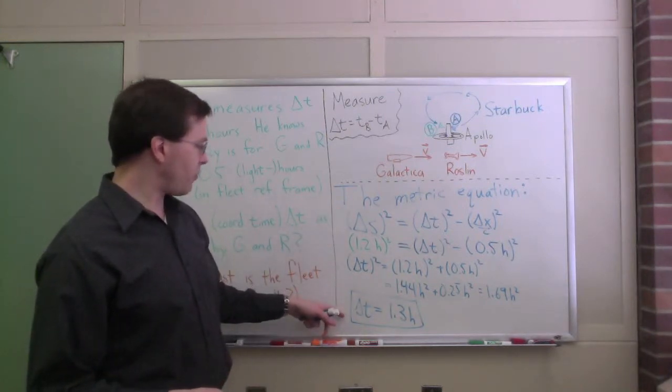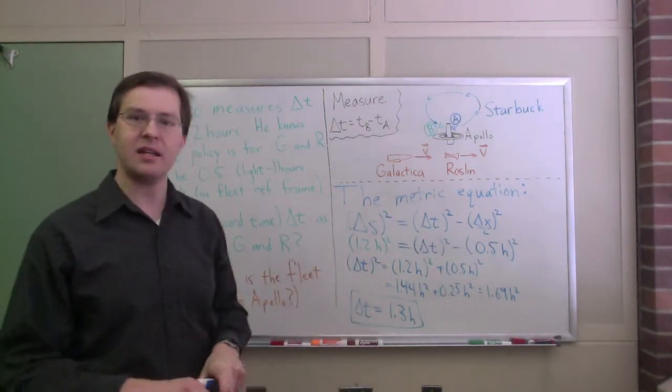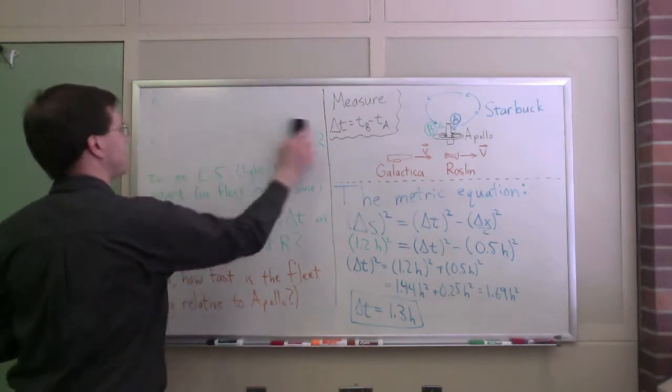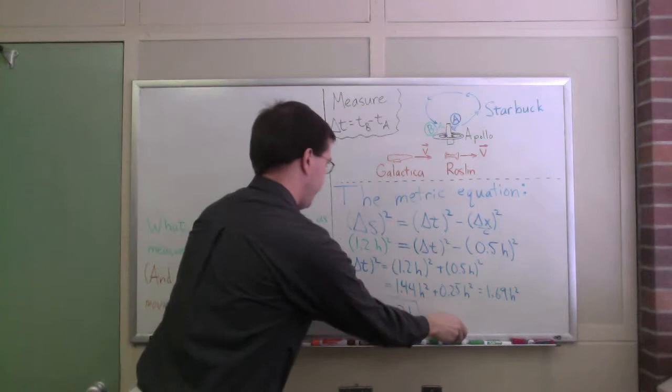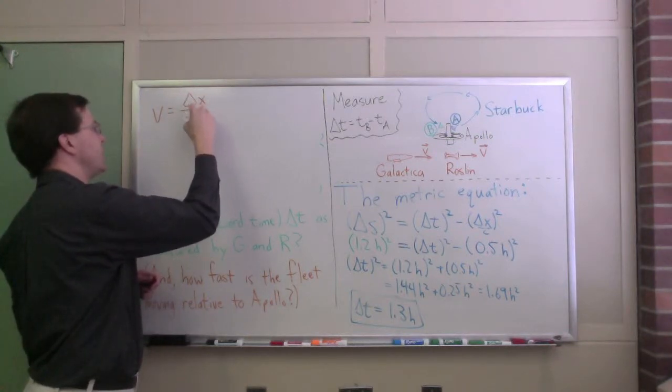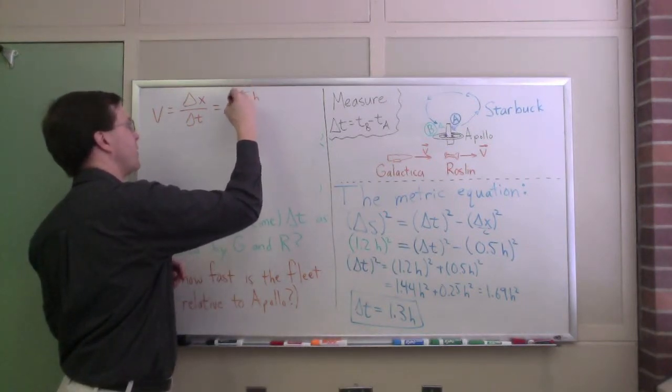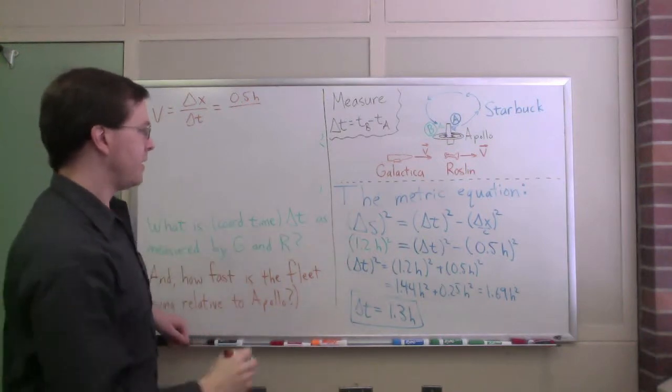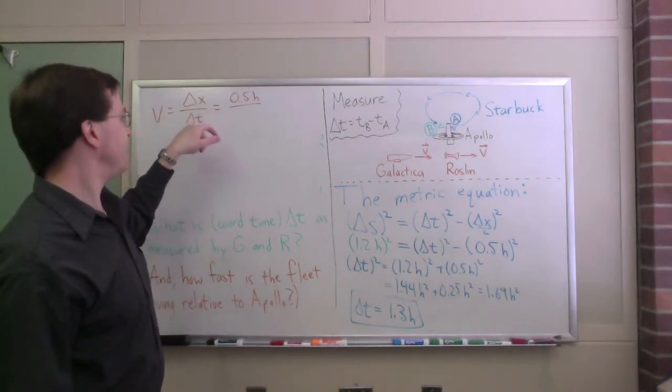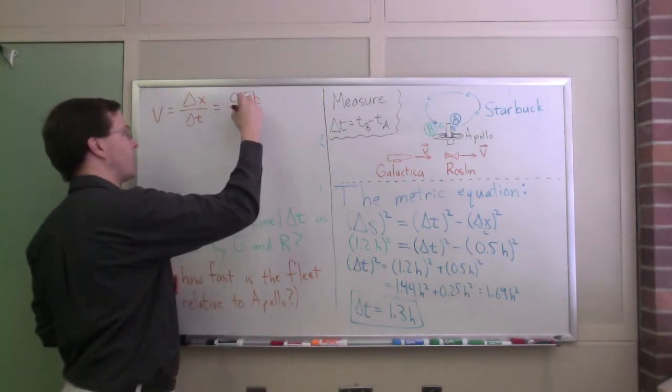And hey, delta t is 1.3 hours. I already know that delta x is 0.5 hours. I can use those two pieces of information to find the speed that the fleet measures for that space station traveling across the fleet. I'll go ahead and just put that right over here. And we will just say the fleet will measure speed is delta x over delta t. That's going to be 0.5 hours divided by delta t of 1.3 hours.